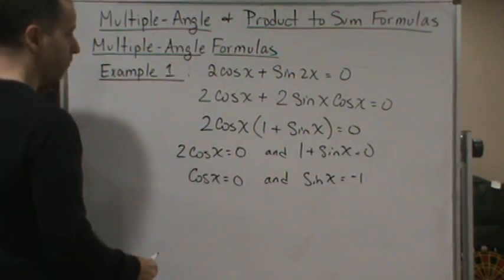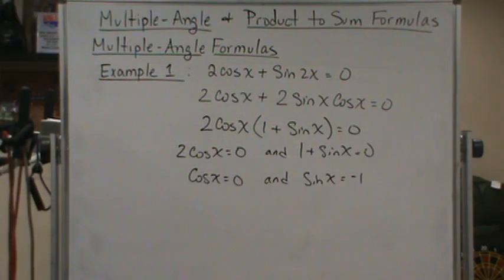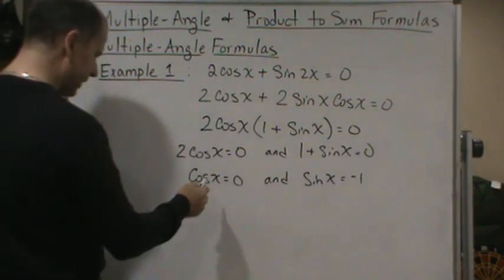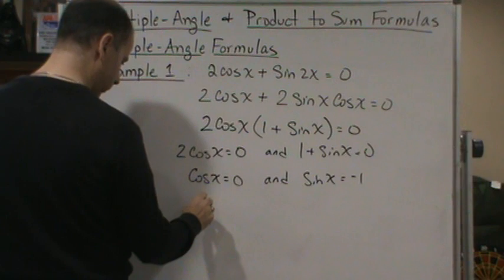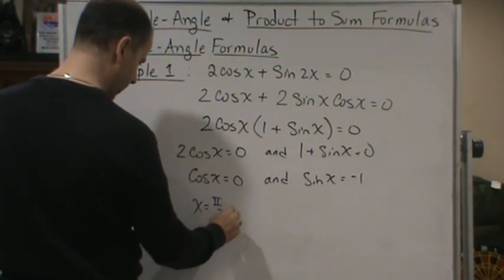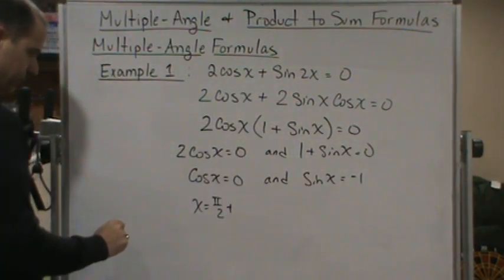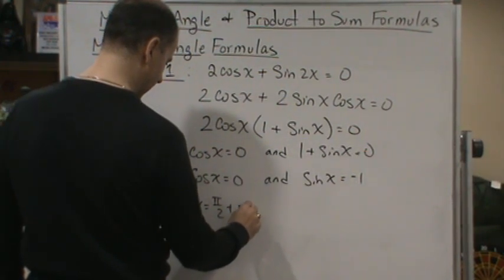And so for both of these, I know that they don't give us an interval, so they don't have a restricted domain. So in this case here, cosine is 0 at pi over, so this is going to be equal to pi over 2 plus n pi.